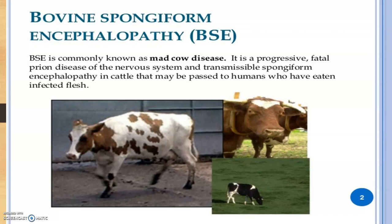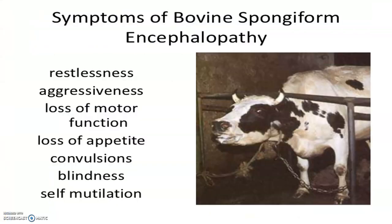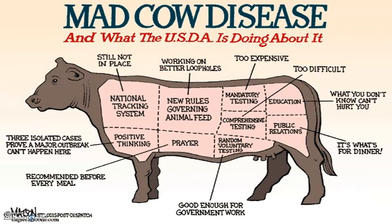BSE — mad cow disease — causes animals to show symptoms like a mad cow: they push their heads against bricks and walls. They get infected through ingestion of infected flesh. Symptoms include restlessness, aggressiveness, convulsions, self-mutilation, and loss of appetite. Rabies must be ruled out. This is mad cow disease.